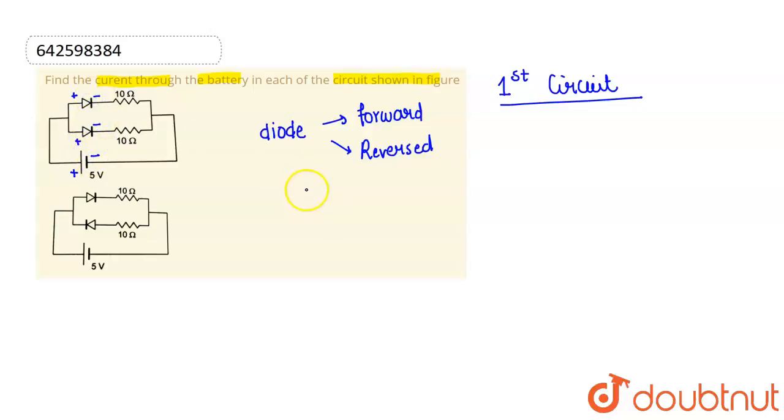So P is connected with positive terminal and N is connected with negative terminal, hence we can see that this is forward biased diode, this is forward biased diode. So in this case,